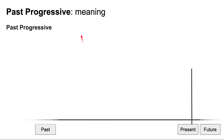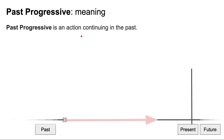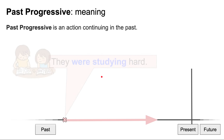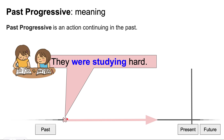Let's look at the meaning. The past progressive is an action continuing in the past. For example, they were studying hard yesterday in the past.